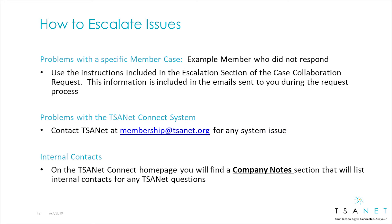Three types of issues may arise that you need to escalate. The first is a problem with a specific case — use the escalation instructions that are included in all emails. For any type of system issue, contact TSAnet. On the TSAnet Connect homepage, you also find a company notes section that will include internal contacts that can be used as needed.